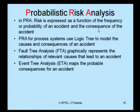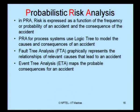In probabilistic risk analysis, people commonly use two types of analysis: FTA and ETA. FTA represents the relationship of relevant causes that lead to an accident, whereas ETA talks about the consequence of an accident. Cause is the reason for an accident and consequence is the after-effect of an accident.